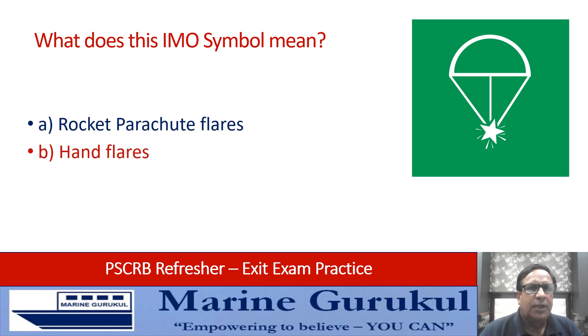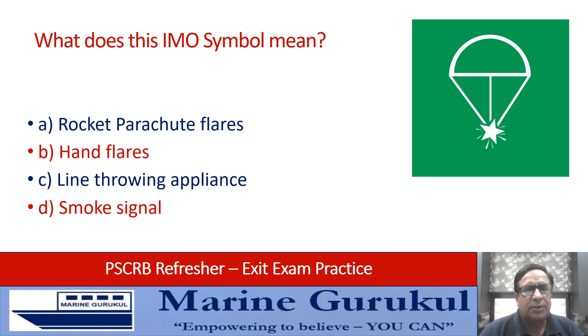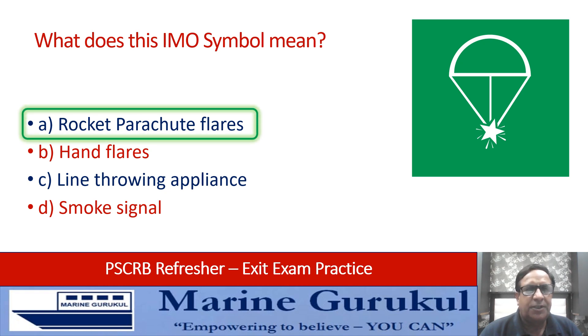What does the IMO symbol on your screen mean? Rocket parachute flare, hand flare, line throwing appliance, or smoke signal? The answer is A — rocket parachute flare.